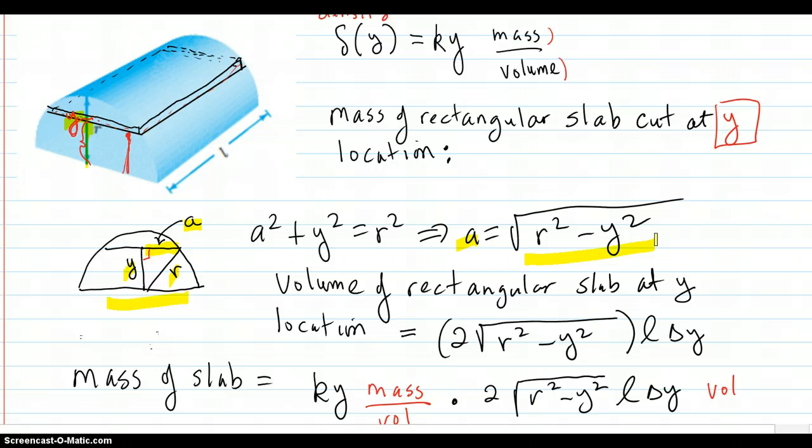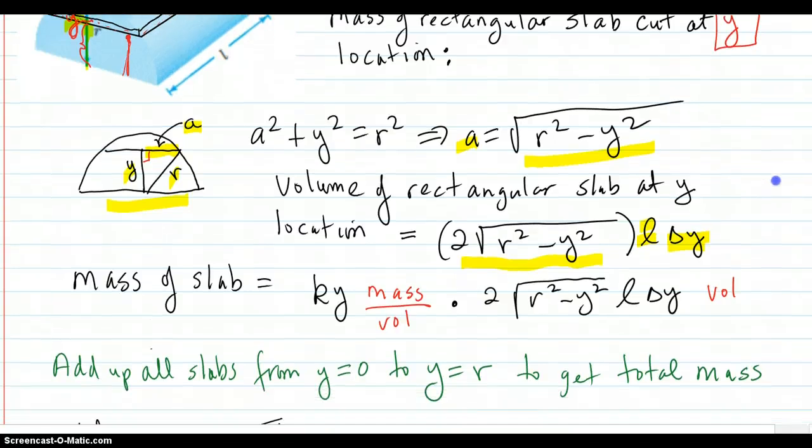The volume of the rectangular slab up at a Y location is two of those A's, because A only went halfway. So it's two of those A's times the length—that was width times the length. Then we also need height, delta Y. So there's your volume of your rectangular slab.